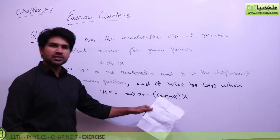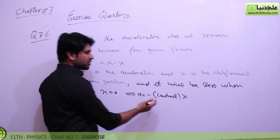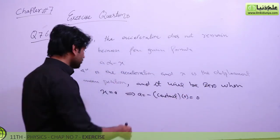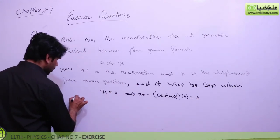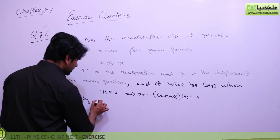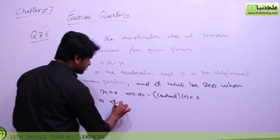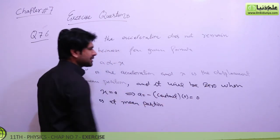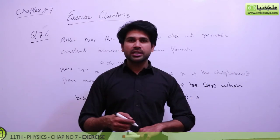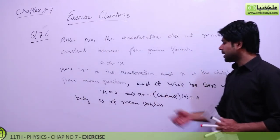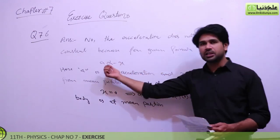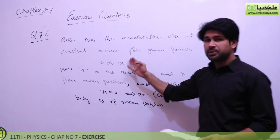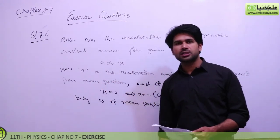When displacement is 0, it means the body is at the mean position. When the body is at the mean position, the displacement x is 0, so from this formula we can see that our acceleration is automatically 0. So when the displacement is 0, our acceleration is 0.